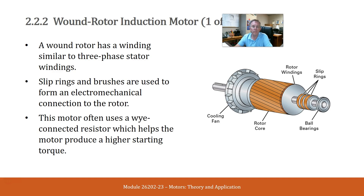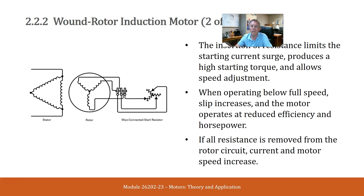Wound rotor induction motor. A wound rotor induction motor has a winding similar to a three-phase stator winding. Slip rings and brushes are used to form an electromechanical connection to the rotor. This motor is often used with a Y-connection resistor which helps the motor produce a higher starting torque. The insertion of resistance limits the starting current surge, produces a high starting torque, and allows speed adjustment. When operating below full speed, slip increases and the motor operates at reduced efficiency and horsepower.